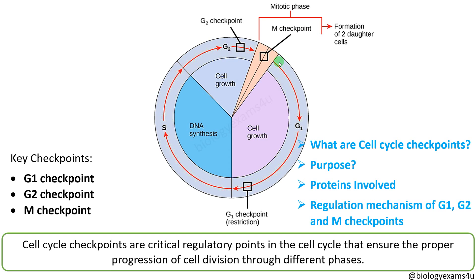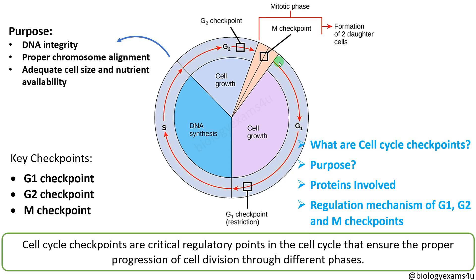What is the purpose of the cell cycle checkpoints? The cell cycle checkpoints check for DNA integrity of the cell at each stage, proper chromosome alignment, and also ensure that the cell has adequate size and nutrient availability to progress to the next stage.